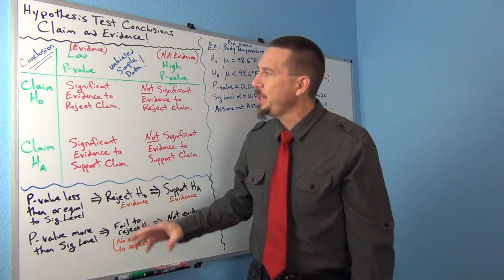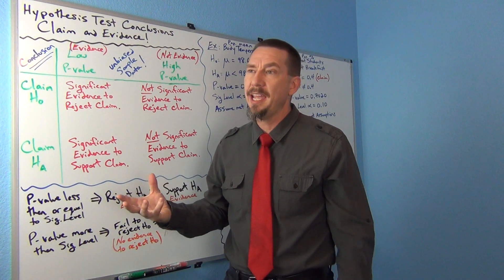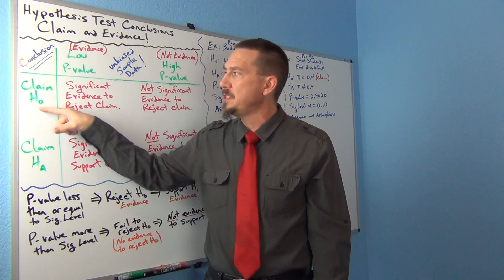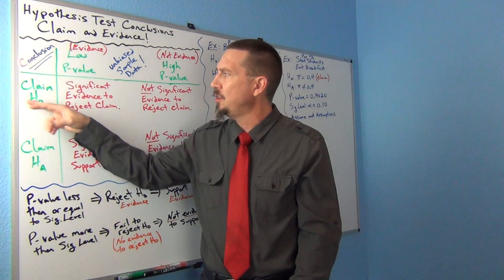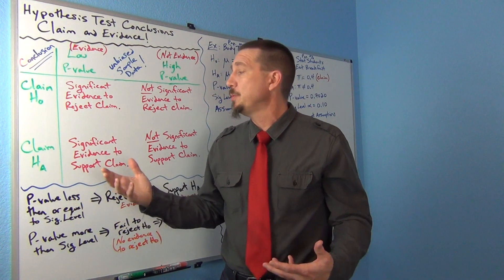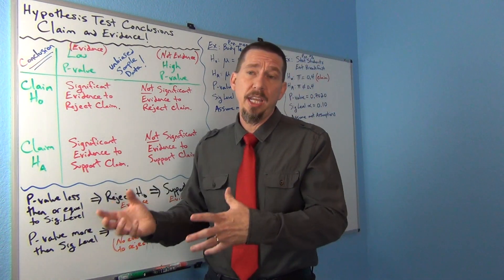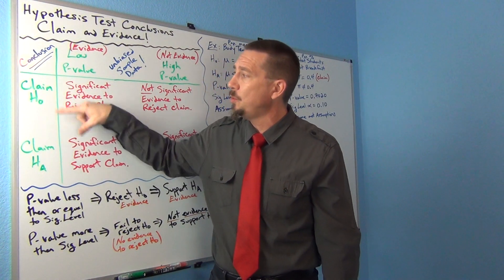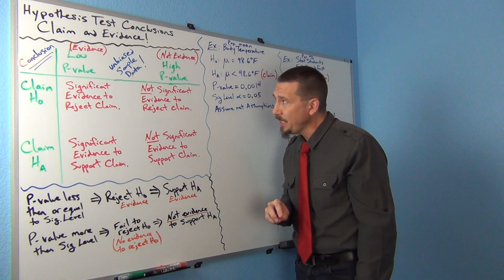The chart shows the population claim — what did the person say or think is true about the population? If the claim was the null hypothesis, that means the claim had some kind of equal-to, not related, or no-effect component. But the claim might also be the alternative — a statement that does not have an equal-to part, or involves change, effect, or relationship. What the person said could be either one of these, and you have to take that into account when you write your conclusion.